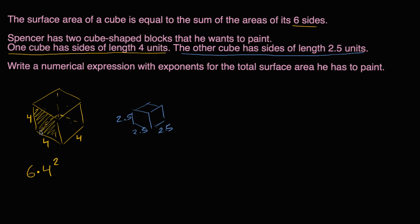So the surface area of the six sides of this cube is six times four squared. Once again, the surface area or the area of each side is going to be four squared, and there's six of them. So that's the surface area of this cube.